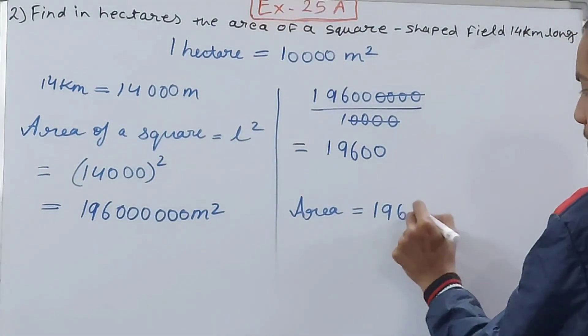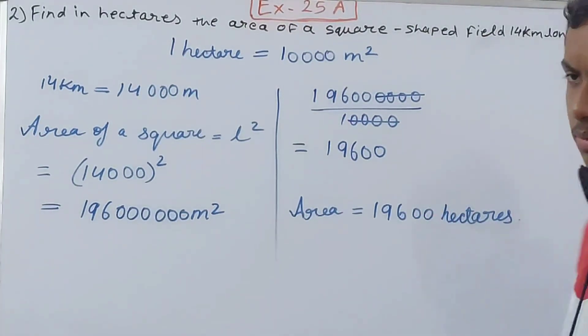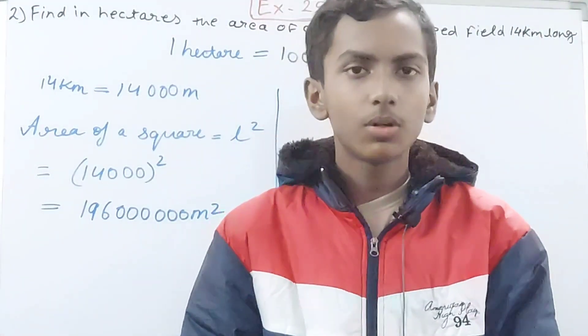So your area becomes what? 19,600 hectares. Put the unit here: hectares. You can write this complete as well, totally up to you, or you can write it in short form.